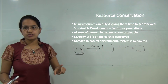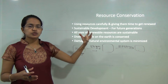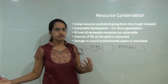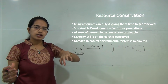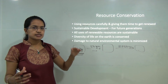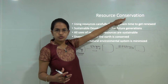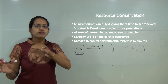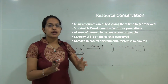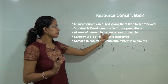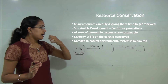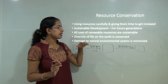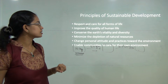All renewable resources are definitely sustainable. Sunlight, wind, and water are all sustainable and will be available for generations. If we develop technology that uses renewable energy at the maximum, we are conserving our resources — for example, using hydroelectric energy conserves coal. The diversity of life is conserved on earth and damage to the natural environment is minimized by using renewable sources.